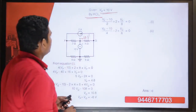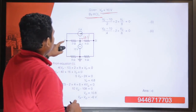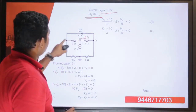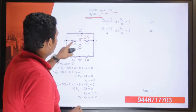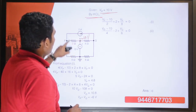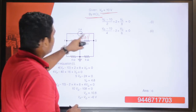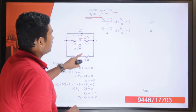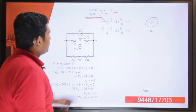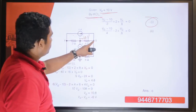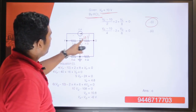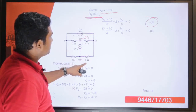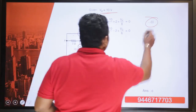Making equations at node P: (Vp minus 10) divided by 2, plus 2 as the outgoing current, plus Vp divided by 8 equals 0 — this is equation 1. Correspondingly at node Q: (Vq minus 10) divided by 4, minus 2, plus Vq divided by 6 equals 0 — equation 2.